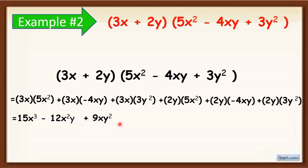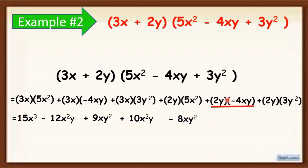Next, simplify: 2y times 5x squared will become 10x squared y. Then, 2y times negative 4xy will become minus 8xy squared — they are unlike signs, that's why it becomes minus. Then, 2y times 3y squared will become 6y cubed.